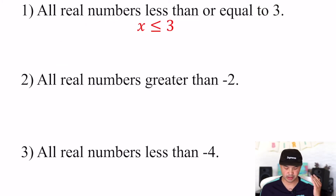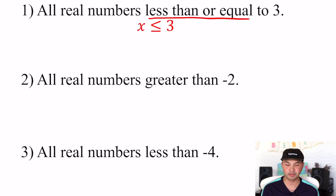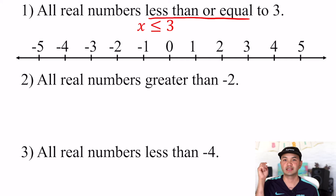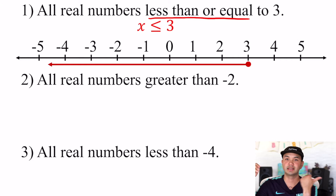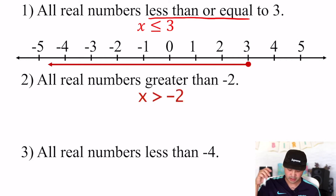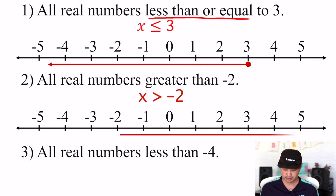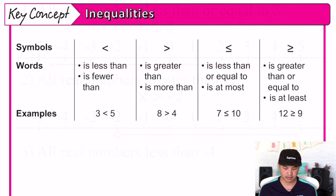So if I'm writing an inequality for 'all real numbers less than or equal to three,' you're going to have that less-than-or-equal-to symbol. On the graph, less than or equal to three means a closed circle at three, and then the arrow goes to the left because it's less than. For 'all real numbers greater than negative two,' it's the greater-than symbol, arrow to the right, and there's no line under the symbol, so it's an open circle because it's not including negative two.